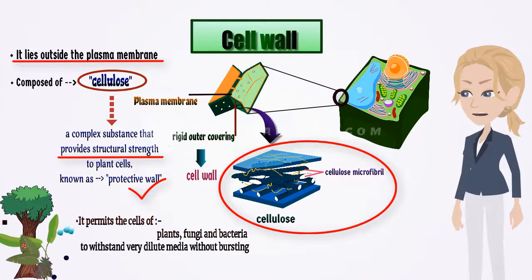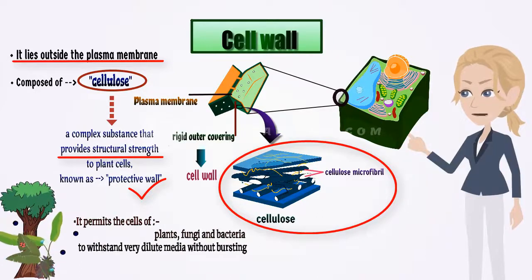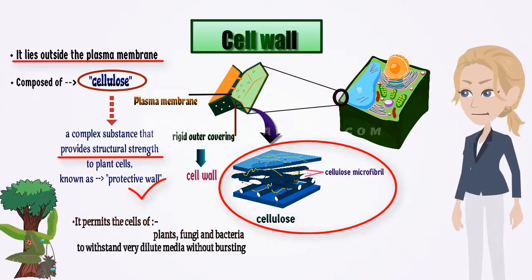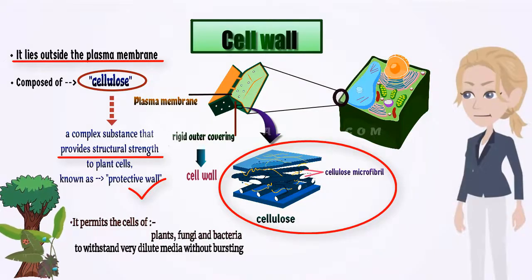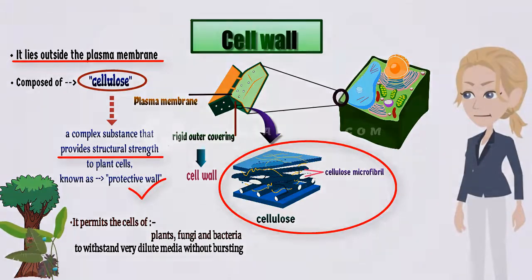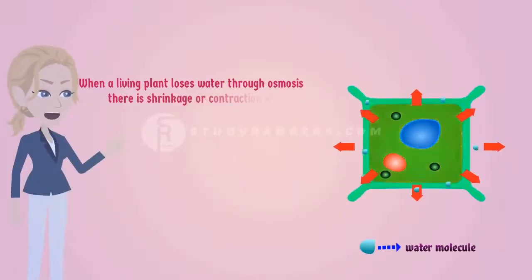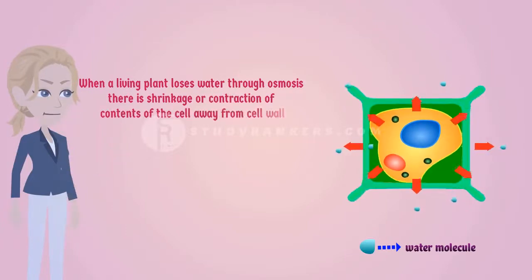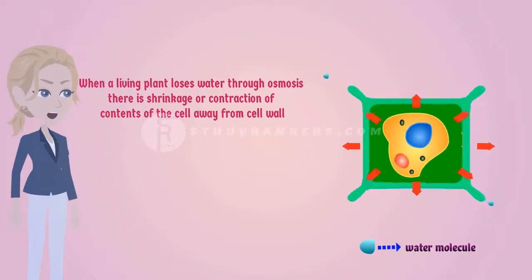It permits the cell of plants, fungi and bacteria to withstand very dilute media without bursting. When a living plant loses water through osmosis, there is shrinkage or contraction of contents of the cell away from the cell wall. This phenomenon is known as plasmolysis.